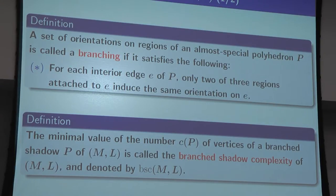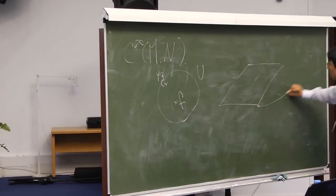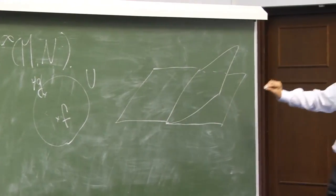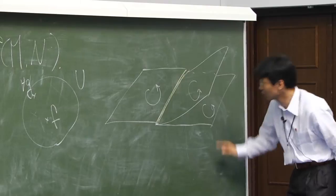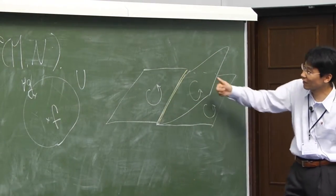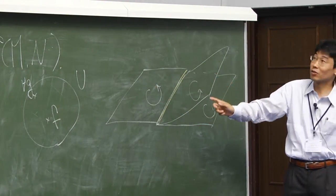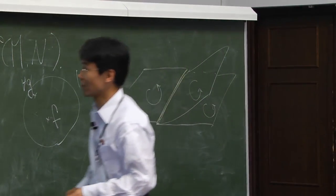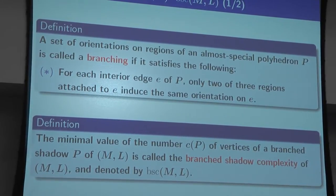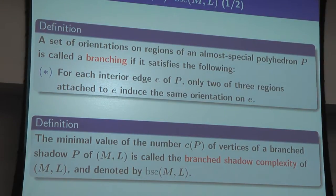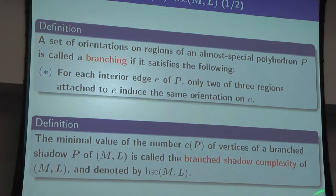A set of orientations on each region of an almost special polyhedron P is called a branching if it satisfies the following: for each interior edge of P, only two of the three adjacent regions induce the same orientation on the edge. If you have a triple line and orient the regions like this, seeing this edge from three faces gives two matching orientations and one opposite — this is exactly a branching. The minimal number of true vertices over all branching shadows is called the branching shadow complexity, denoted BSC.